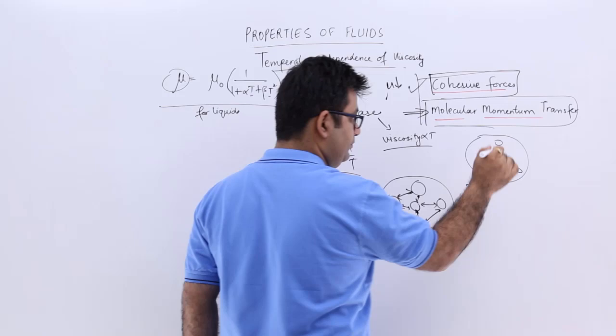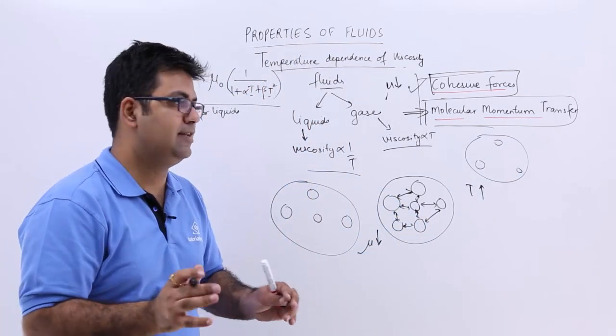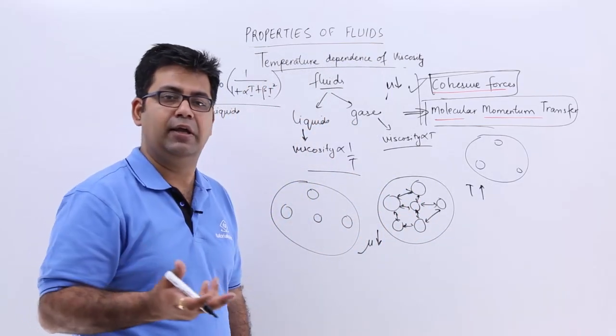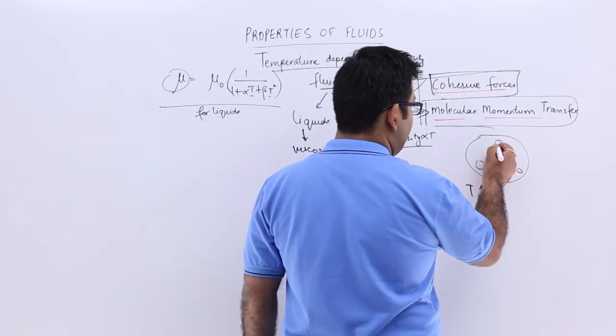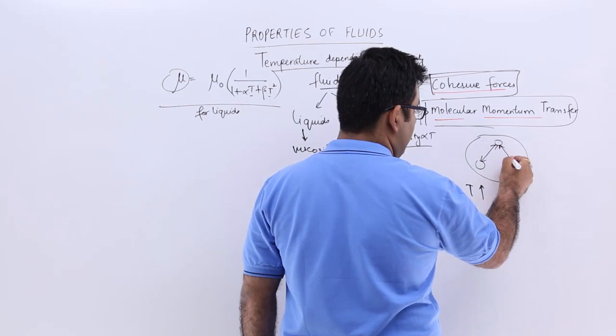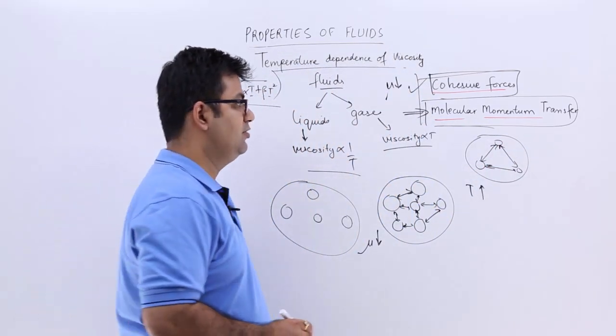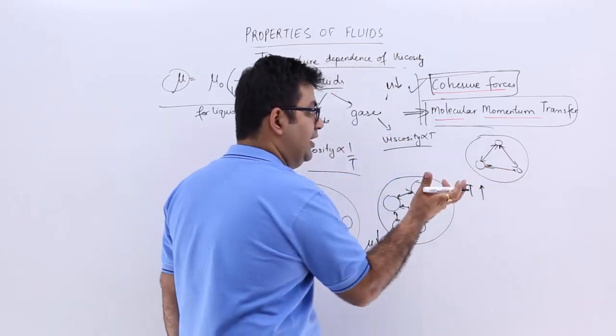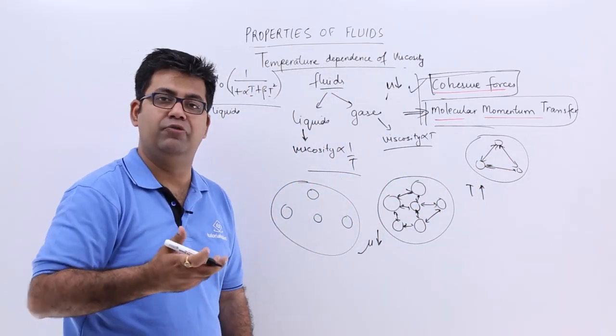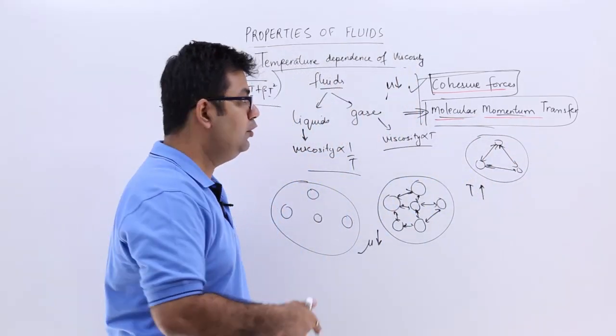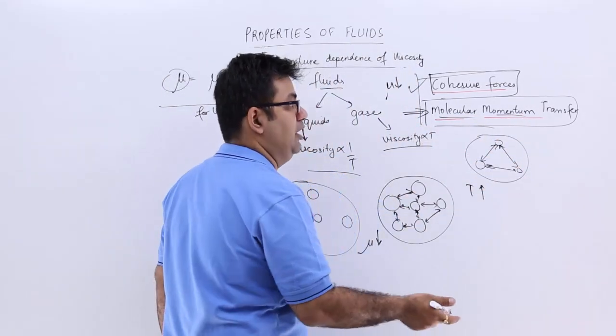With less number of molecules, when you increase the temperature, the average kinetic energy increases and they start colliding with each other on a very frequent basis. When this starts to happen, the collisions become too frequent, the molecular momentum transfer increases. And due to this, the viscosity has to increase.